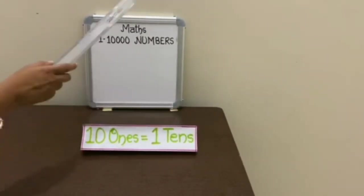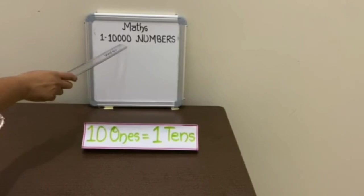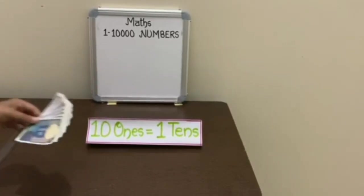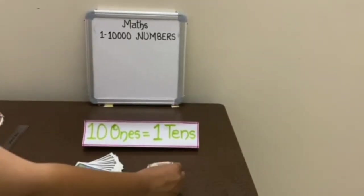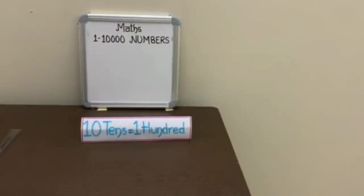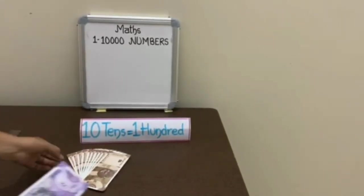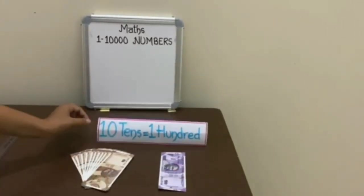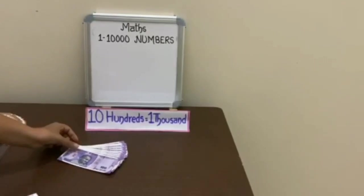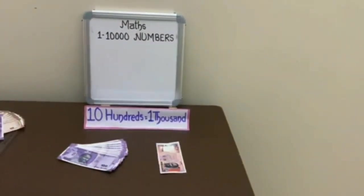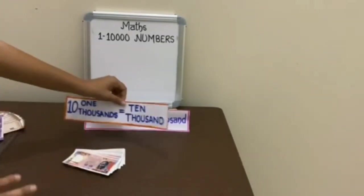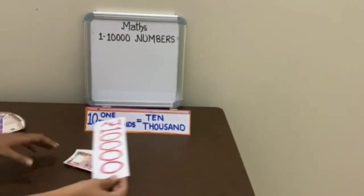Hello students. Till now you have learned numbers from 1 to 10,000. Today we will revise a little bit. You already know that 10 ones are equal to 1 ten, and 10 tens are equal to 100. Next, 10 hundreds are equal to 1,000 and 10 thousands are equal to 10,000.